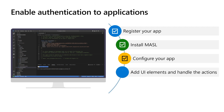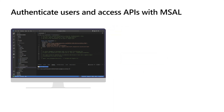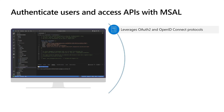Then add the UI elements like the sign-in and sign-out buttons or links, and wire up the corresponding actions to initiate the sign-in and sign-out flow. Finally, protect access to certain pages or endpoints in your application. MSAL libraries support a range of application and authentication flows. They provide support for many platforms and programming languages such as .NET, JavaScript, Java, Python, Android, and iOS.